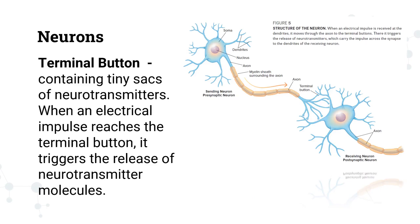Here is another illustration of a neuron showing the cell body, the axon — the elongated part — covered by myelin sheets, and the terminal buttons or axon terminals. These buttons contain tiny sacks of neurotransmitters. When an electrical impulse reaches the terminal button, it triggers the release of neurotransmitter molecules. Within a neuron, the activity is mainly electrical. But when information travels from one neuron to another, the activity is chemical — they communicate with each other through neurotransmitters.